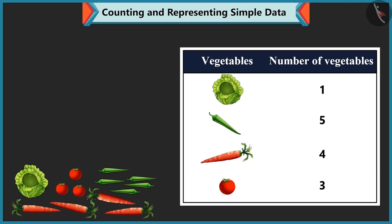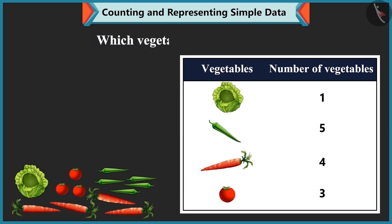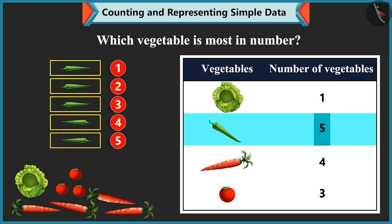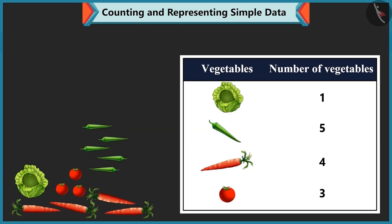Okay, Bubbly. Now, tell me. Which vegetable is most in number? There are 5 chillies. So, it is most. You are right, Bubbly.